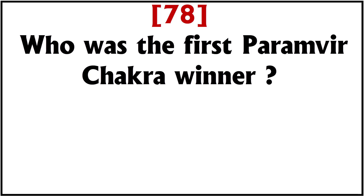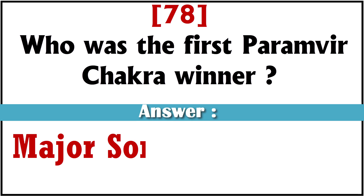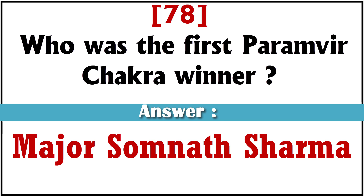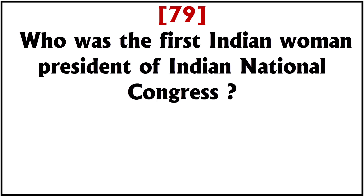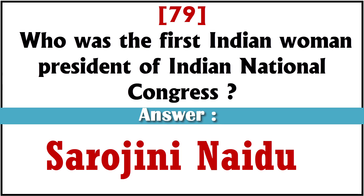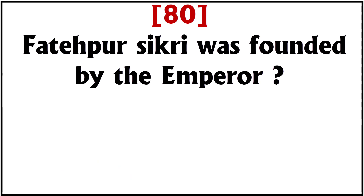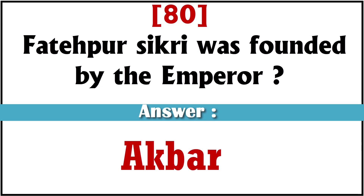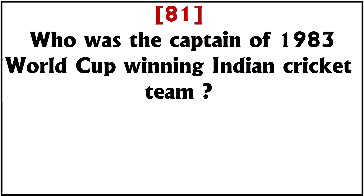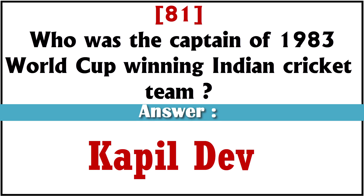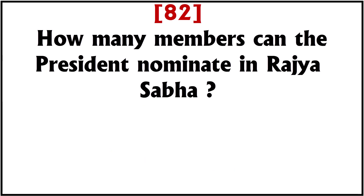Who was the first Param Vir Chakra winner? Major Somnath Sharma. Who was the first Indian woman president of the Indian National Congress? Sarojini Naidu. Fatehpur Sikri was founded by which emperor? Akbar. Who was the captain of the 1983 World Cup winning Indian cricket team? Kapil Dev. How many members can the president nominate in Rajya Sabha? Twelve.